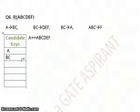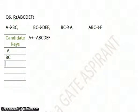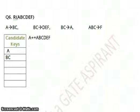Next, I search for B on the RHS. B is here, so I can replace B by A, giving AC. But the same important property applies: this is not minimal because A itself is a candidate key. So we cannot include AC. I search for C on the RHS. C is here, so I replace C by A, giving BA. Again, you cannot include this because A is a candidate key and BA is not minimal. So these are the only two candidate keys for this question.